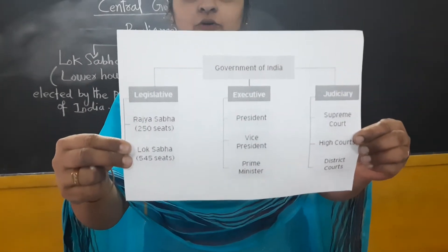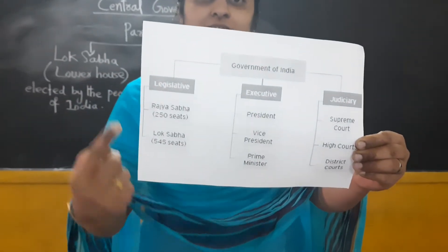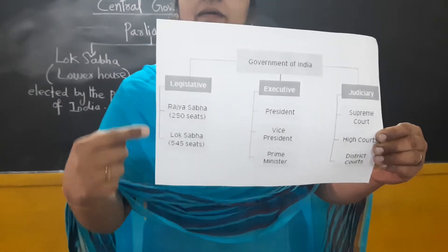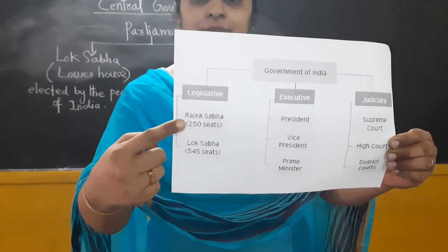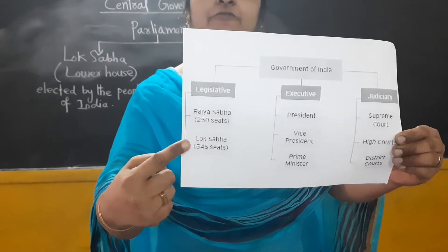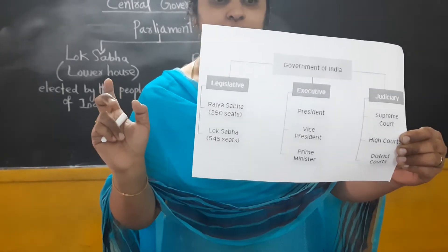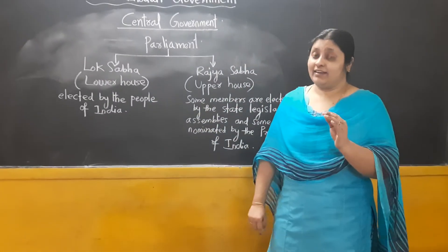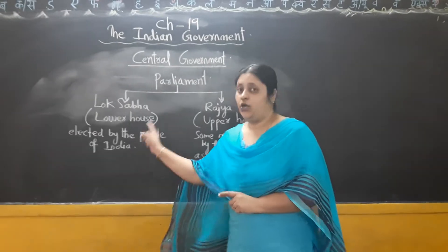For the central government, three bodies are there: legislative, executive, and judicial. The legislature makes the laws for our country — that is Rajya Sabha and Lok Sabha. In Rajya Sabha, 250 members are there, and in Lok Sabha, 545 members are there. The members of Lok Sabha are directly elected by the people of India.